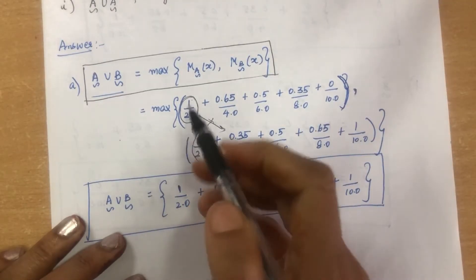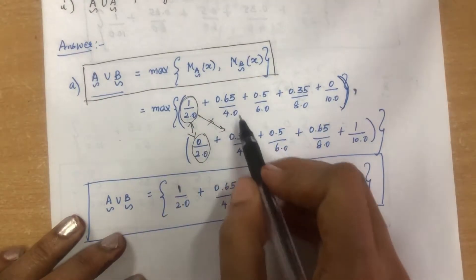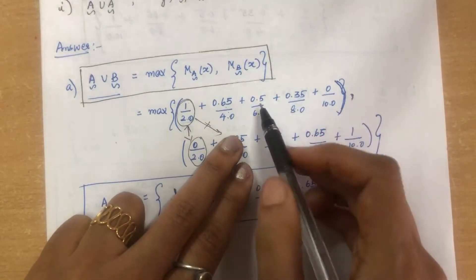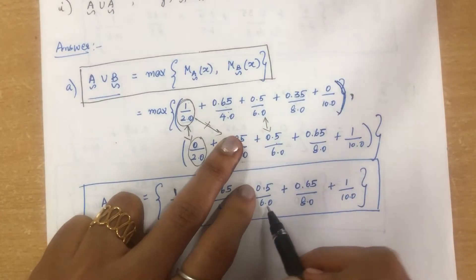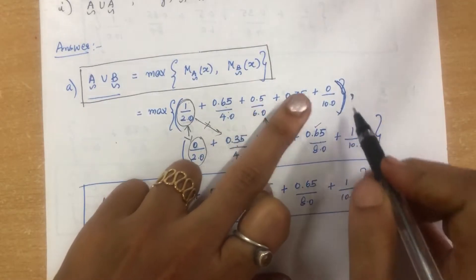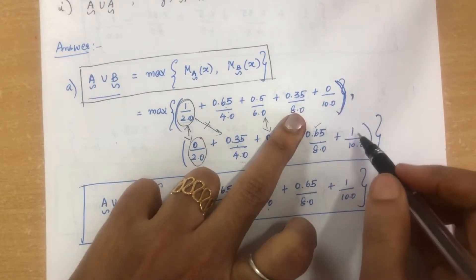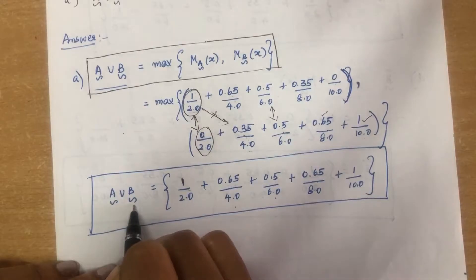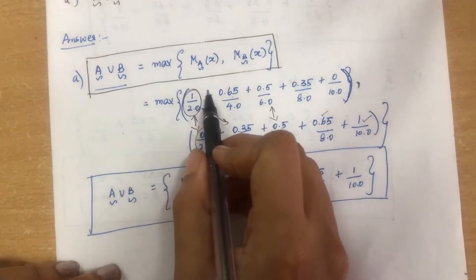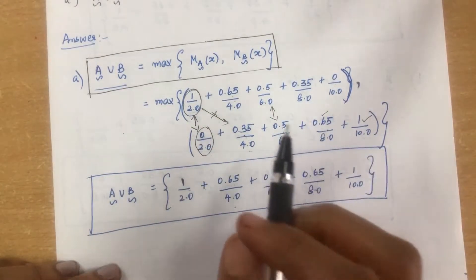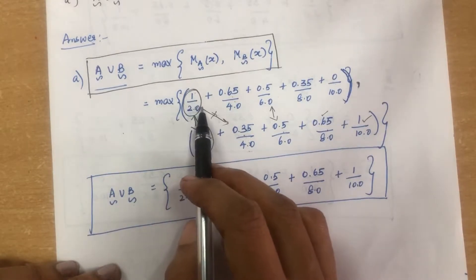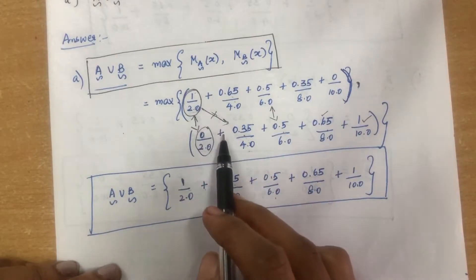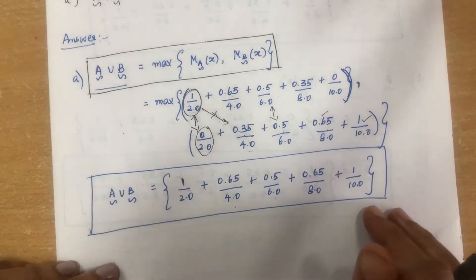Continuing A union B: for 6.0, max(0.5, 0.5) = 0.5, so 0.5/6.0. For 8.0, max(0.35, 0.65) = 0.65, so 0.65/8.0. For 10.0, max(0, 1) = 1, so 1/10.0. This notation should not be confused with normal division or addition — the slash shows the membership degree for each element, and plus just separates terms.